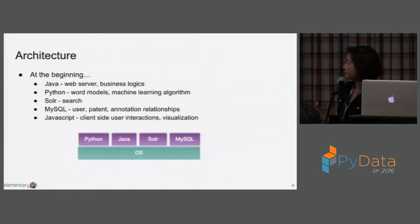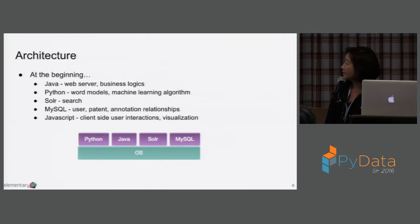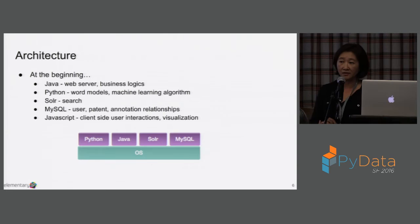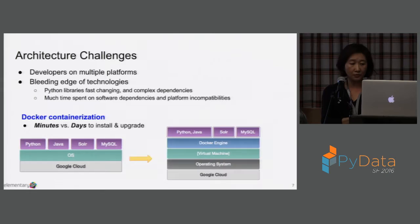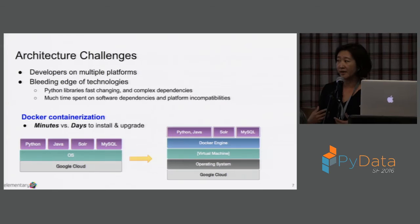That worked well up to a certain point until we needed to periodically update the libraries in Python. That created a lot of inefficiency because when you upgrade Python, especially the machine learning packages, it's rather sensitive to the underlying platform. Every time we needed to upgrade, everyone had to upgrade, and we ended up losing a lot of time. We're a pretty small company — we can't afford to have people spend hours upgrading their libraries. So we ended up using Docker containerization.